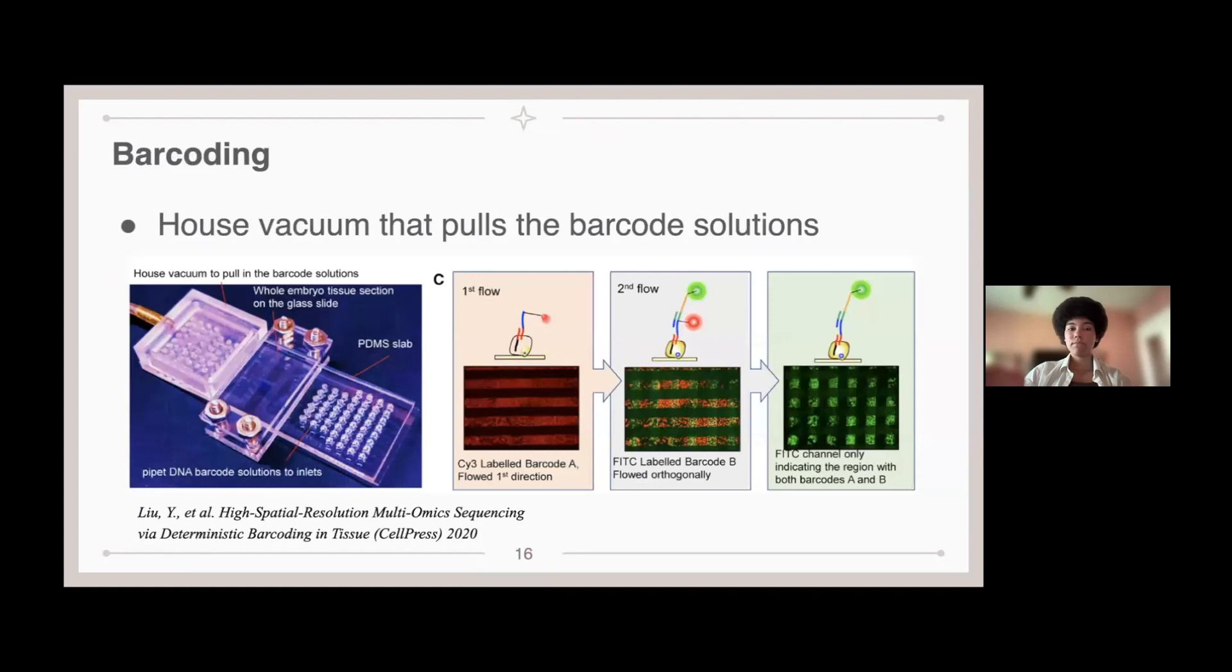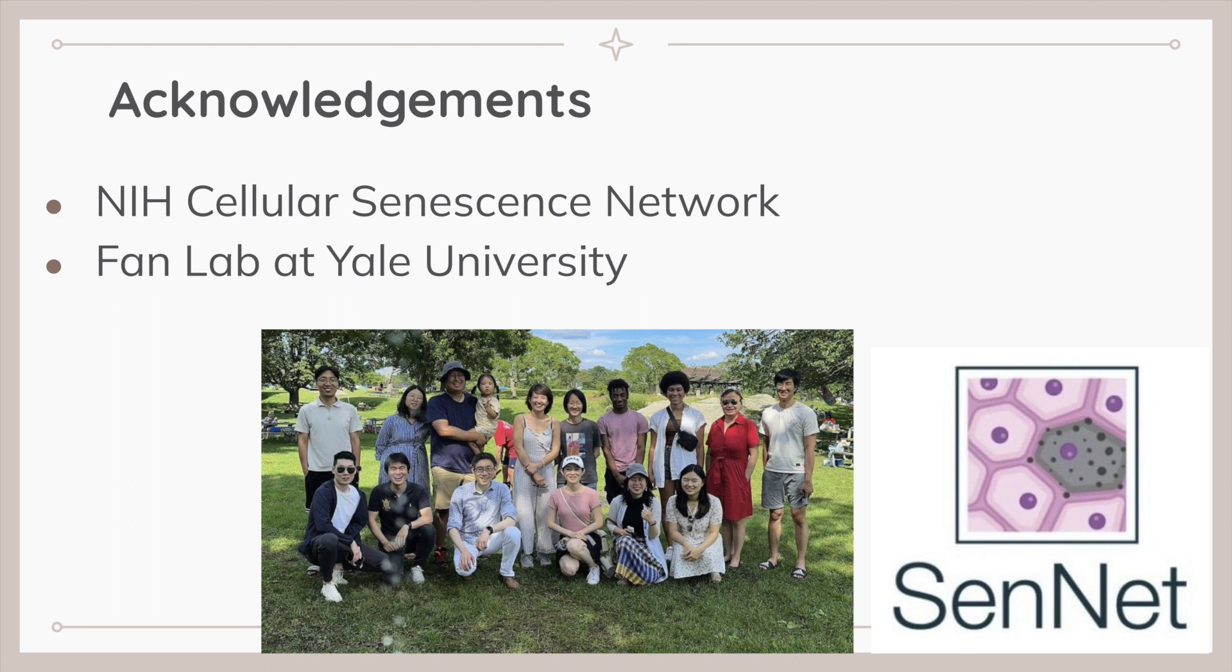And so then this is the actual barcoding. As you can see, the house vacuum pulls the barcode solution. It is placed on one side of the PDMS slab, and then it pulls it across the tissue to create this 2D array of the two barcodes.